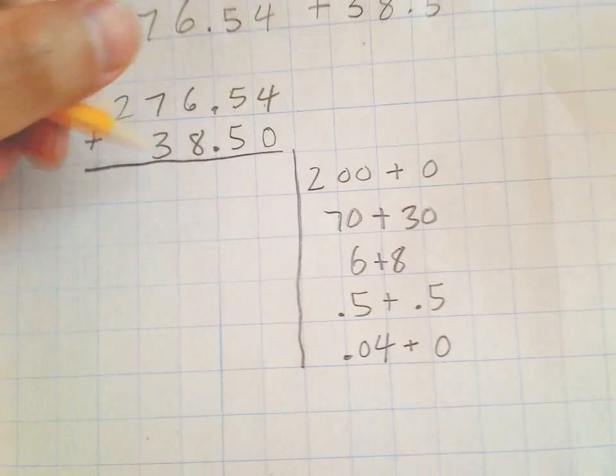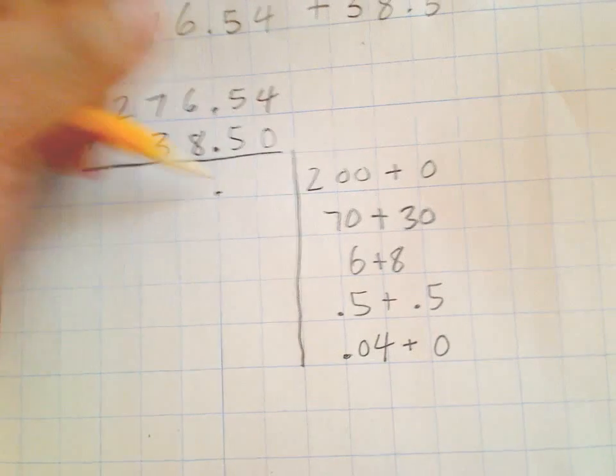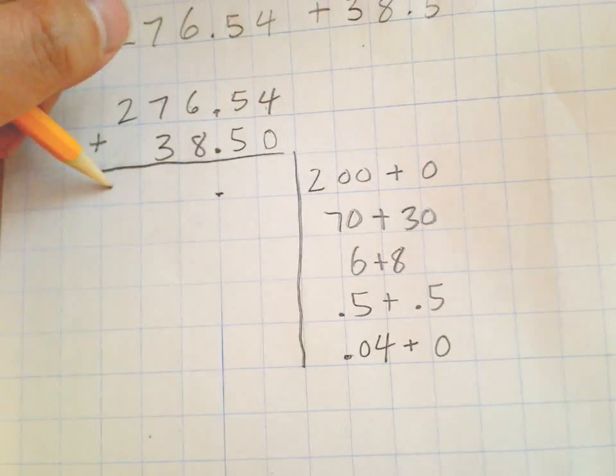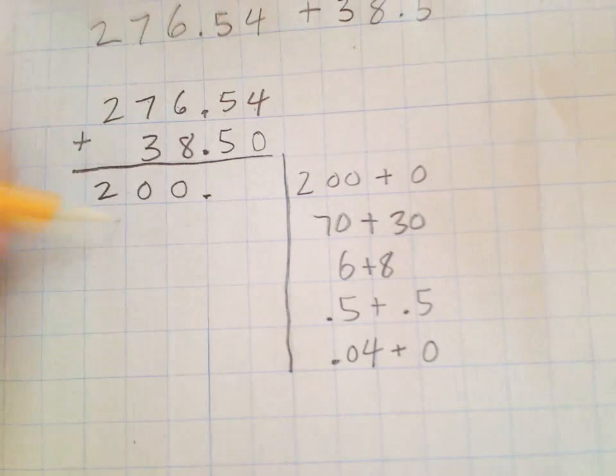So we'll start again by respecting our place value. Two hundred plus zero, well that's two hundred. Make sure that you're going to place the two hundred in the proper place value under the hundreds place.